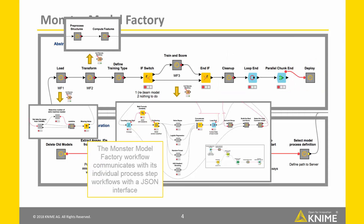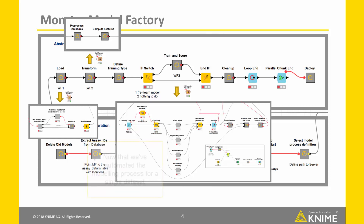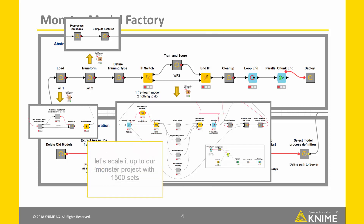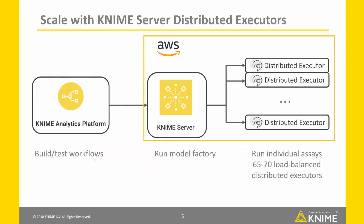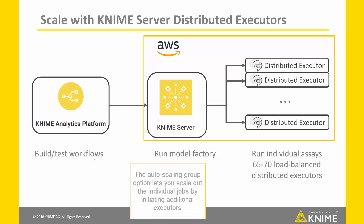During execution, the Monster Model Factory workflow communicates with its individual process step workflows via a JSON interface. Now that we've automated the modeling process for a single dataset, let's scale it up to our Monster project with 1500 sets. To run the Monster Factory, we use the distributed executors on KNIME Server installed on the AWS Autoscaling group. The Autoscaling group option lets you scale out the individual jobs by initiating additional executors when the CPU load reaches a certain limit.